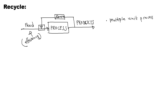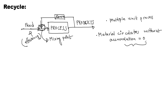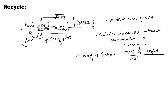When we do the recycle, what is the problem? The mixing point is a key issue — mixing of feed and recycle at the mixing point. The recycle ratio is the main problem. Recycle ratio is equal to the mass flow rate of the recycle divided by the mass flow rate of fresh feed.